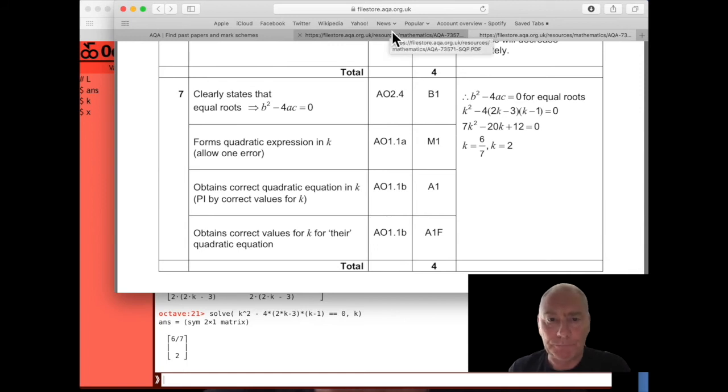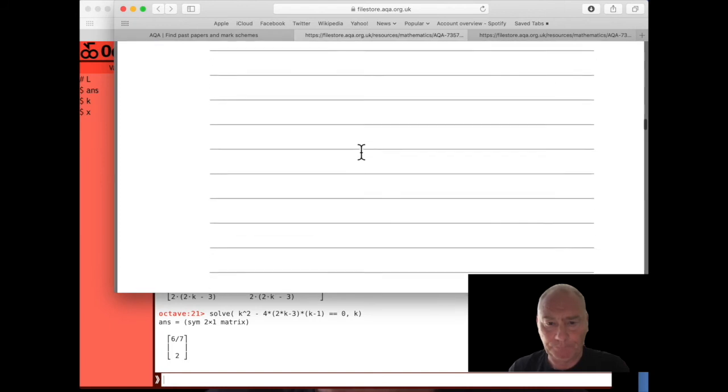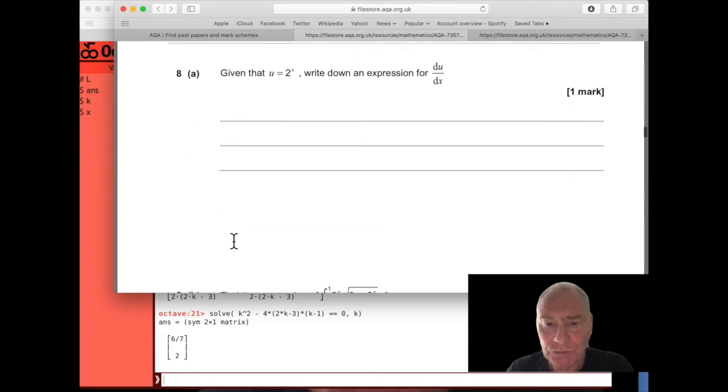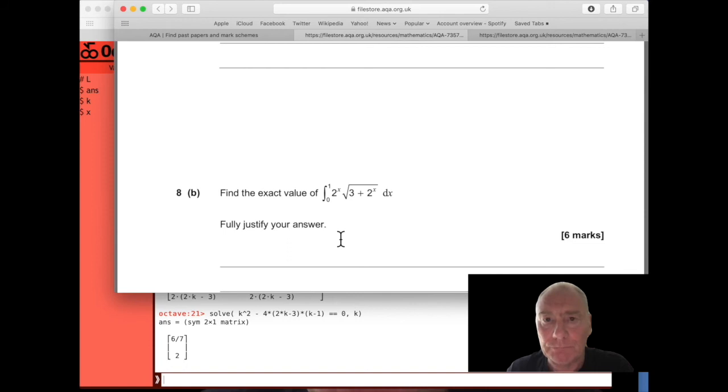Let's look at a slightly more complicated example. We'll go to question eight. Given that u equals two to the power x, write down an expression for du dx. Well, we could do that. But let's try and do something a little bit more challenging. An integral, calculus. Find the exact value of the integral from zero to one of two to the power x multiplied by the square root of three plus two to the power x. Fully justify your answer. That means you'd have to show all your working out. So let's say you've done all your working out, and you're sitting there thinking, I wonder if I've made a mistake. So let's ask MATLAB to do this for us. In this case, it's Octave. I call it MATLAB because I'm used to using MATLAB.